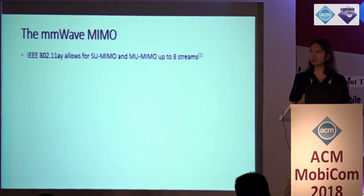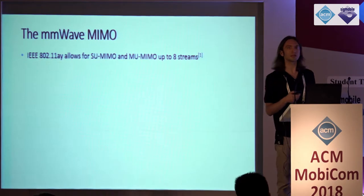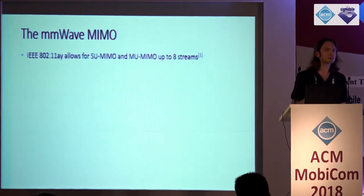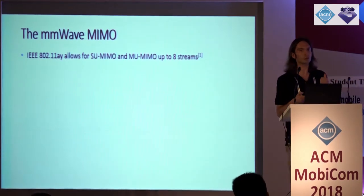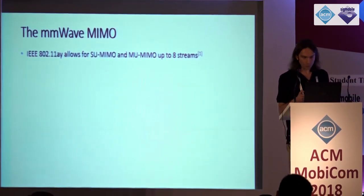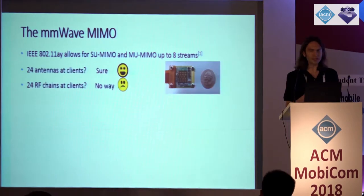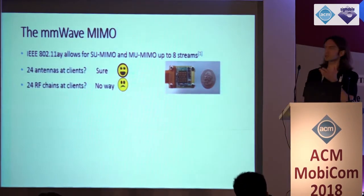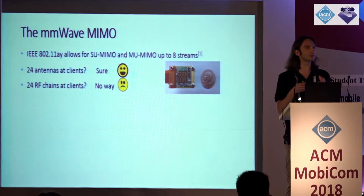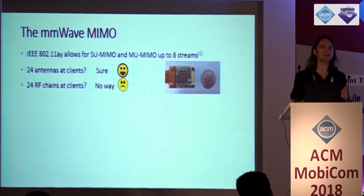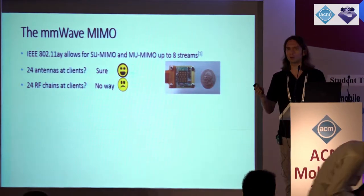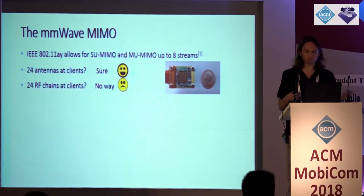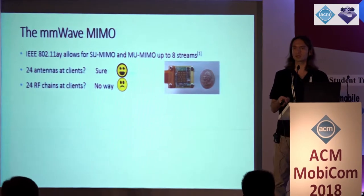The situation is different in the millimeter wave case. The upcoming 802.11ay standard allows for single-user MIMO and multi-user MIMO for the downlink case only, with up to eight streams. In the millimeter wave case, you can pack many antenna elements into one phase array, but you cannot have the same number of RF chains — one RF chain per antenna element — due to cost, size, and processing constraints.